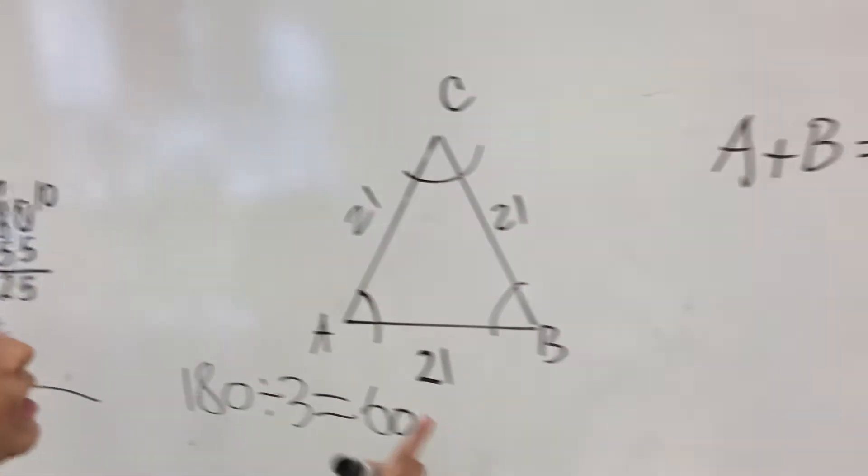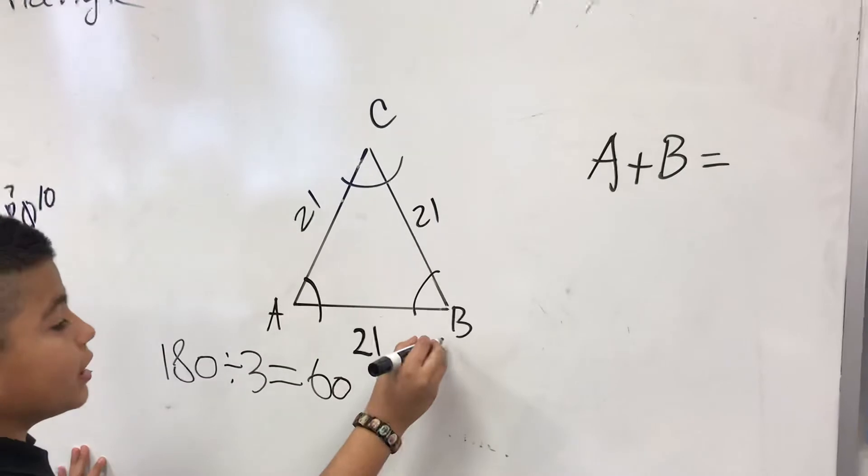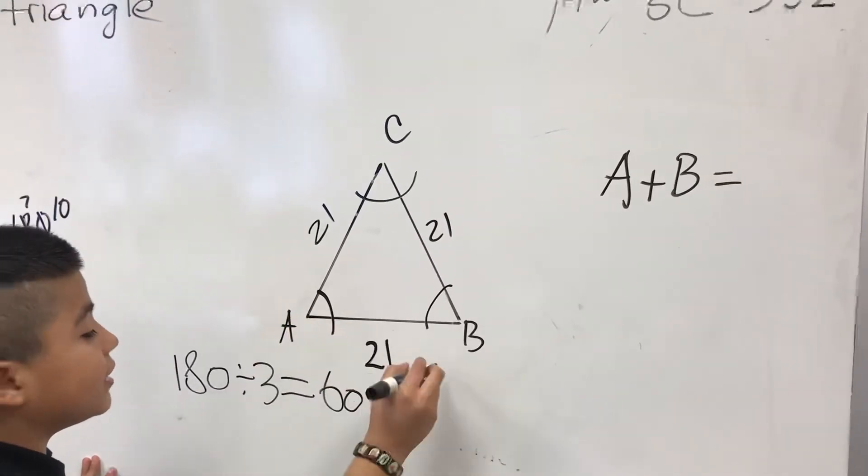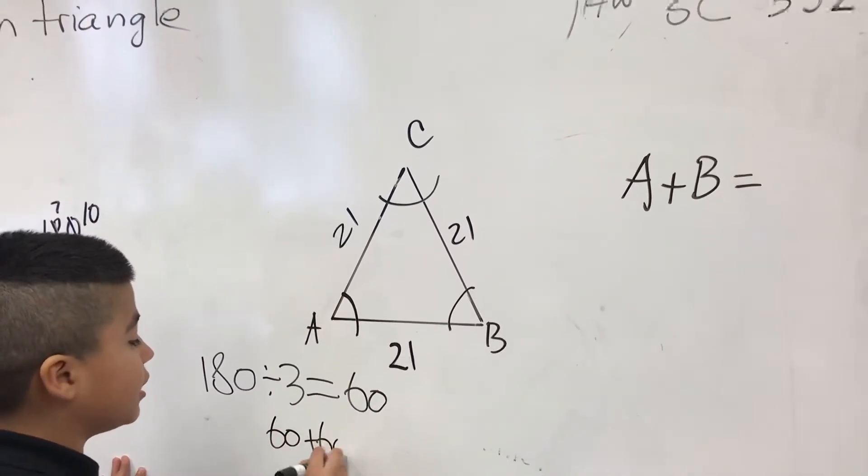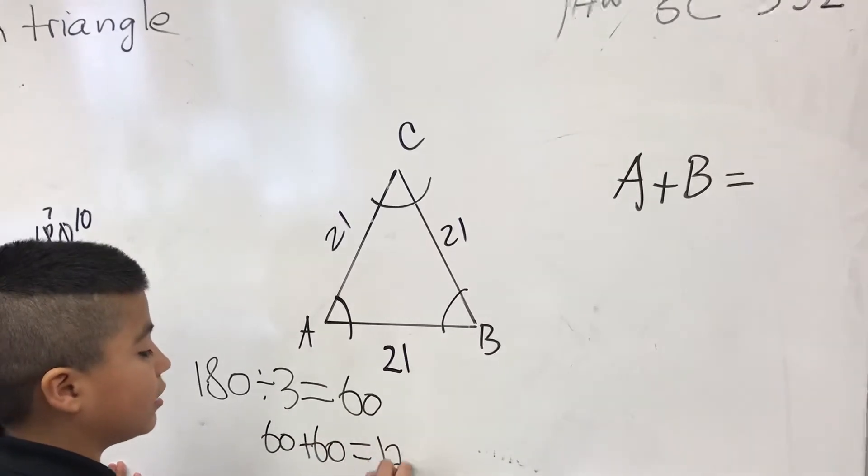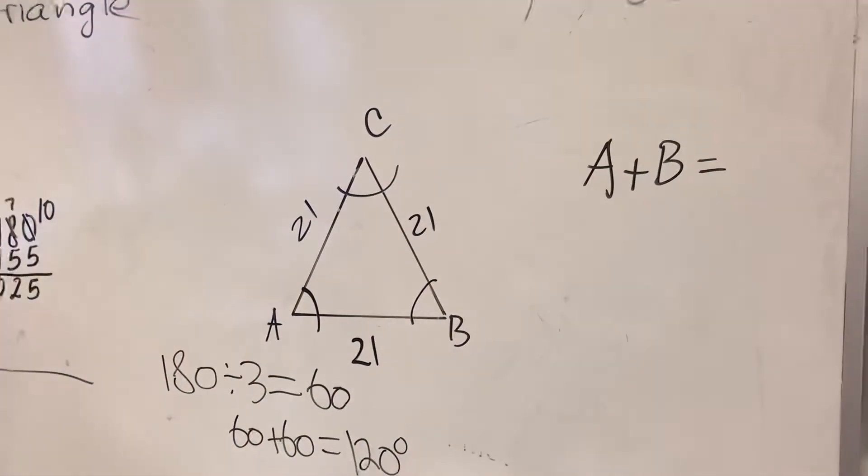But in the problem, it says angle A plus angle B. So, since this is 60 and this is 60, we have 60 plus 60, which equals 120 degrees, and that's the answer.